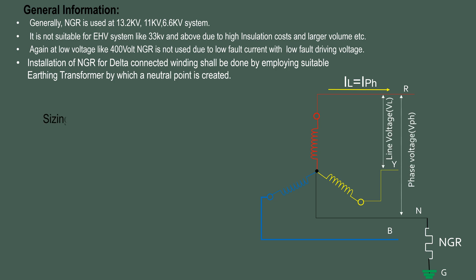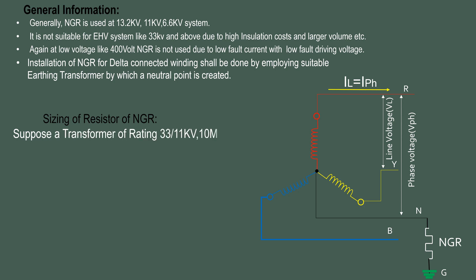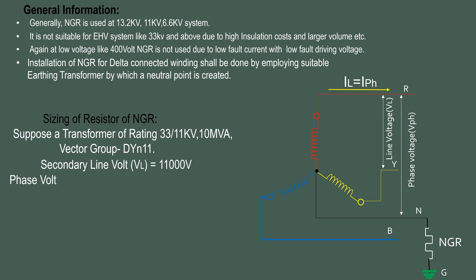Sizing of Resistor of NGR — that is, Calculation of Resistance: Suppose a transformer operating at 33/11 kV, 10 MVA, having vector group DYN11. Hence, the line voltage is 11,000 V. Therefore, the phase voltage at the star side is equal to line voltage divided by √3, which is equal to 11,000 ÷ 1.732, equal to 6,351 V.